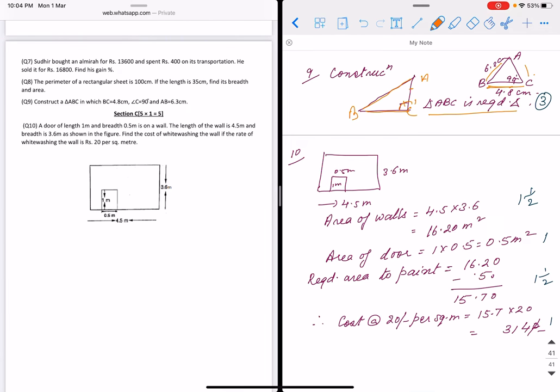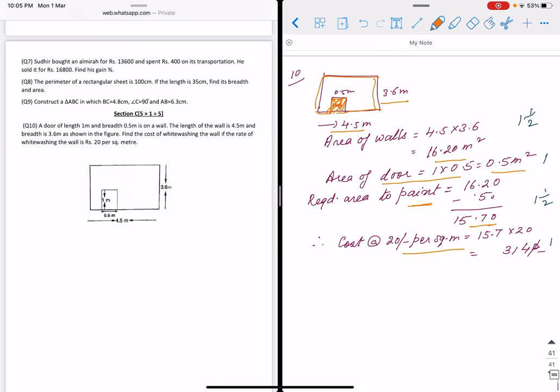Question number ten: There is a wall with a door. We need to find how much area to paint by excluding the door area. First, area of wall is 4.5 × 3.6 = 16.20 m². Area of door is 1 × 0.5 = 0.5 m². Area to paint is 16.20 - 0.5 = 15.7 m². Cost at the given rate: 15.7 × 20 = 314 rupees. This way we complete the section.